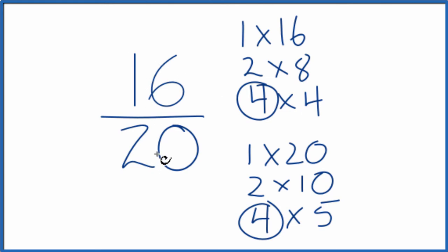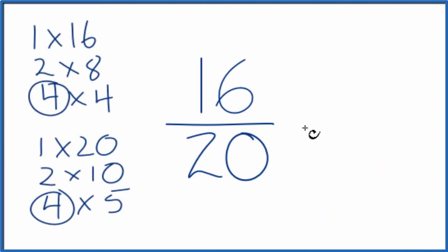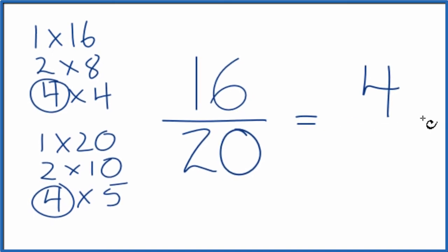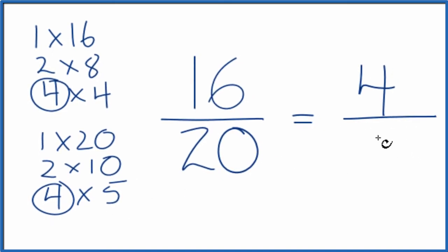And we'll have simplified 16 over 20. 16 divided by 4, that's just 4. And then 20 divided by 4, that's 5. So we've simplified 16 over 20 down to 4 over 5.